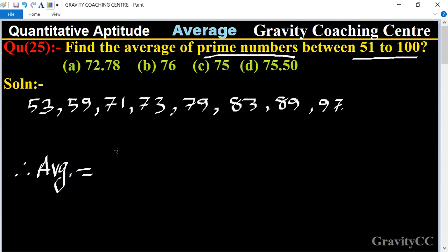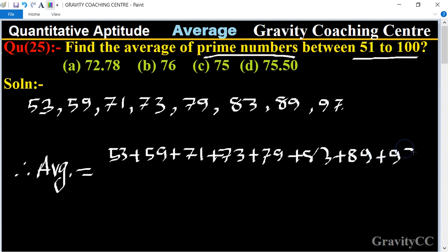First of all, we add the numbers: 53 plus 59 plus 71 plus 73 plus 79 plus 83 plus 89 and 97, upon the total number of values.